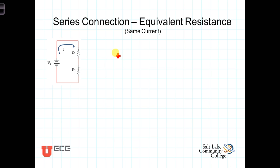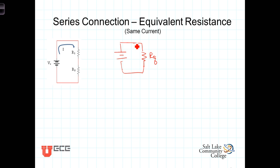The question is: is there some equivalent resistance that those series resistors can be reduced to that would be equivalent to R1 and R2 in series? By equivalence we mean that the source Vs would be the same source in both circuits, and the same current I would flow in the equivalent circuit as flows in the original.